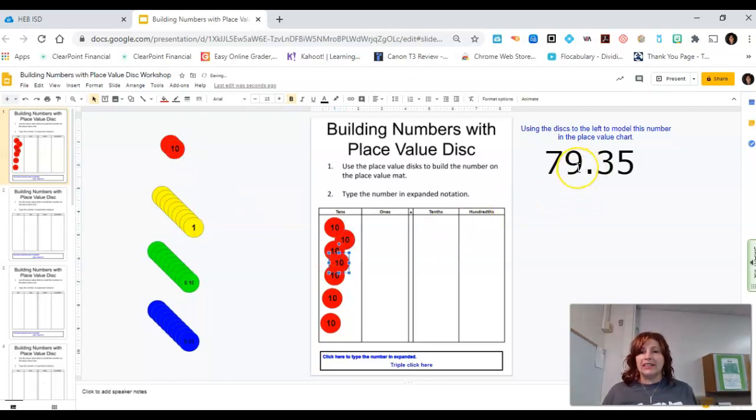I'm going to need 9 of the ones place. How many is that? 1, 2, 3, 4, 5, 6, 7, 8, and 9.